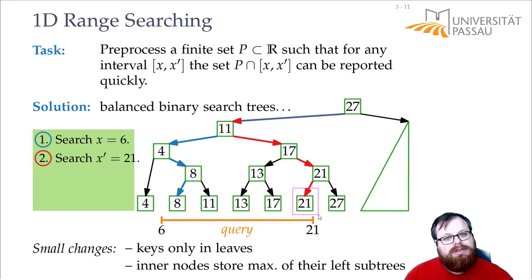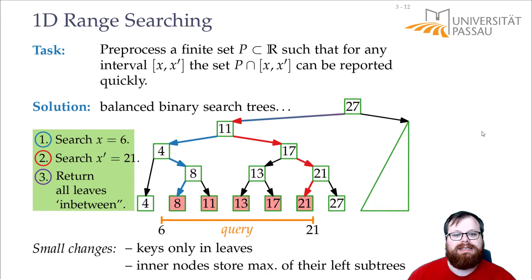Maybe this one we don't want to report, if what we found here is too large. For example, if this is a 22, then with the search we would also find this key, but we can easily filter that out at the very end. That's only this one element, that's the largest one that we might have to not report. And how can we quickly report all these elements here?